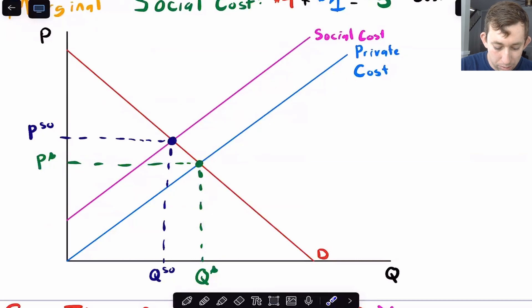But this private cost, this blue line doesn't take into account the cost of pollution on this town. If I want to think about the cost of pollution on this town, I am going to have to make the cost higher at every quantity, I'm gonna have to raise it by that dollar per megawatt hour that we just talked about.